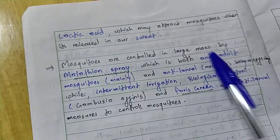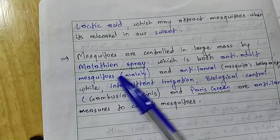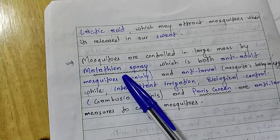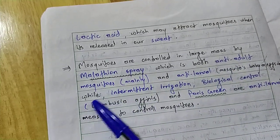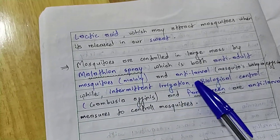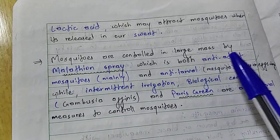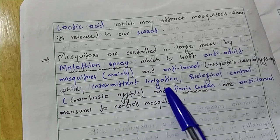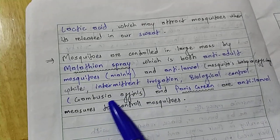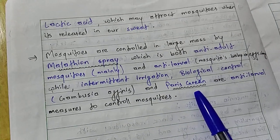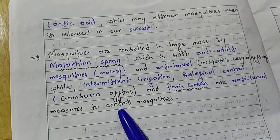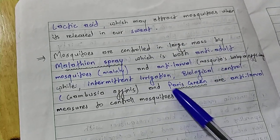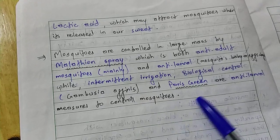Mosquitoes can be controlled in large numbers by Malathion spray, which is both anti-adult and anti-larval — meaning it kills both the larval and adult forms. Other methods such as intermittent irrigation, biological control using Gambusia affinis, and Paris green are anti-larval measures used to control mosquitoes.